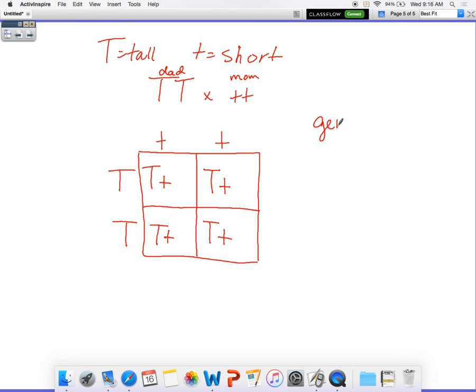So now our genotypes. Because we have four that are big T, little t. So we have a ratio of 0, 4, to 0. Because this would be homozygous dominant. This is heterozygous. This is homozygous recessive.